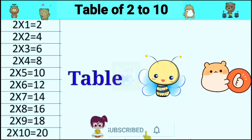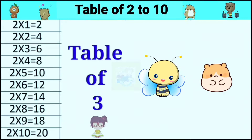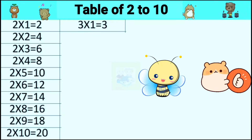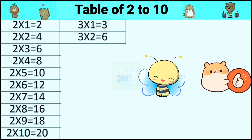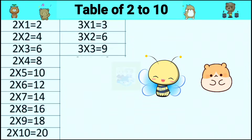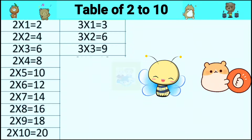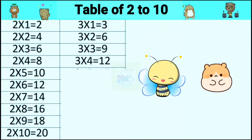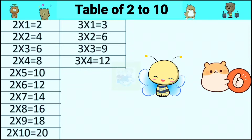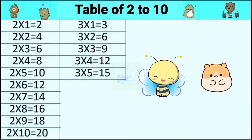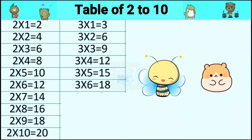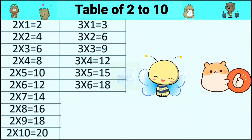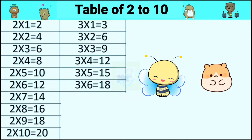Table of 3. 3 ones are 3, 3 twos are 6, 3 threes are 9, 3 fours are 12, 3 fives are 15, 3 sixes are 18.